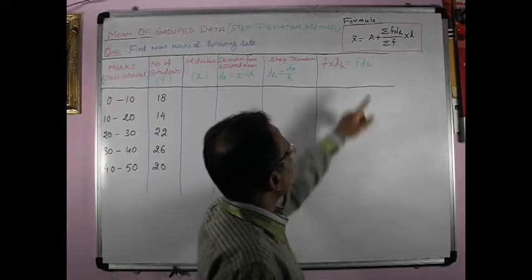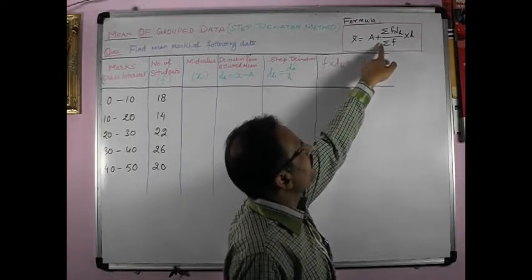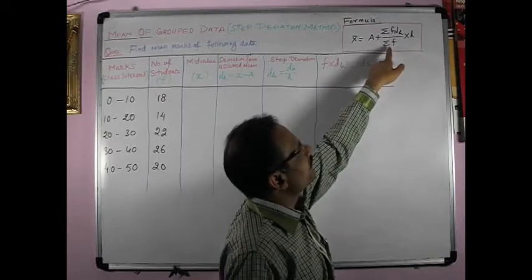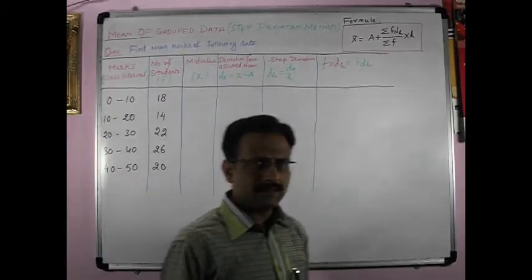The formula of this step deviation method is x̄ = a + (Σfdh/Σf) × h.